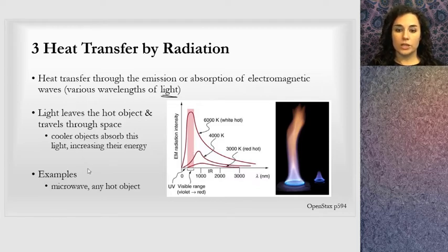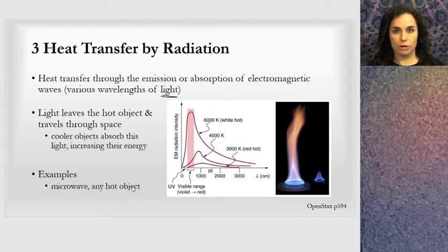Examples of radiation: any hot object. You, for instance, have radiation coming from you. Another simple example is one in your kitchen, a microwave. Maybe you have a microwave that emits radiation to heat objects.